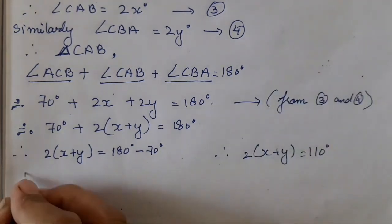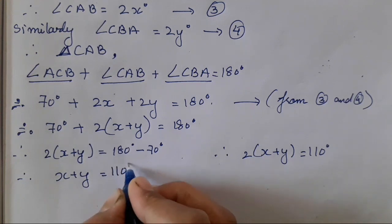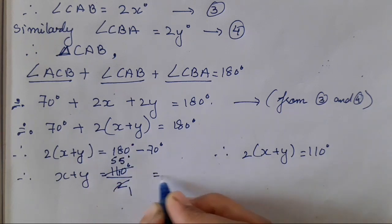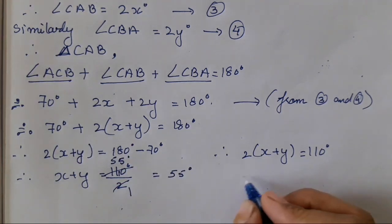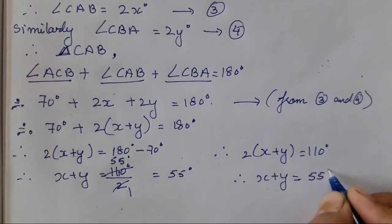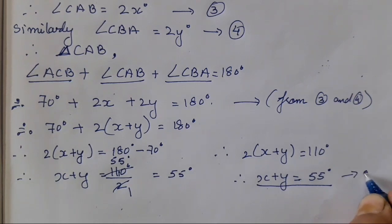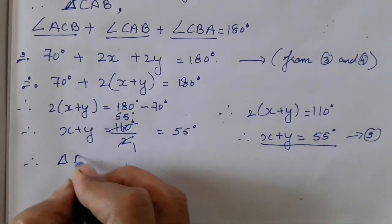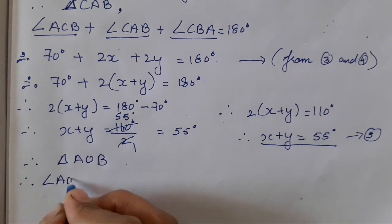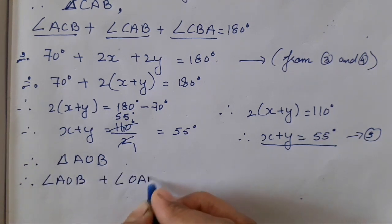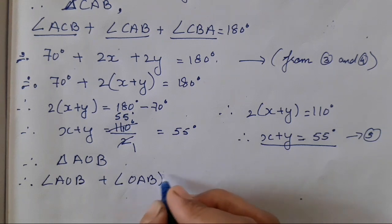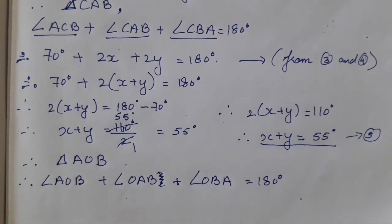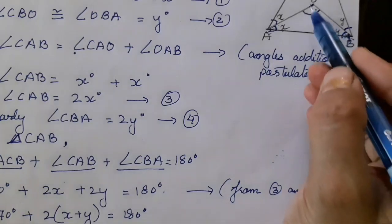Dividing both sides by 2, X plus Y equals 55°. This is marked as the 5th step. Now considering triangle AOB: angle AOB plus angle OAB plus angle OBA equals 180°.